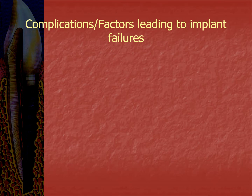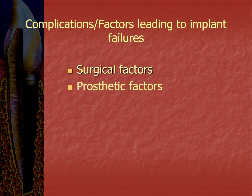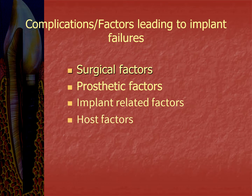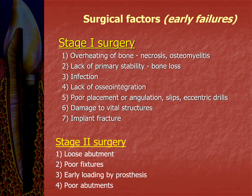Complications or factors leading to implant failures include surgical factors, prosthetic factors, implant-related factors, and host factors. Surgical factors — early failures can happen during stage 1 or stage 2 surgery. Stage 1 complications include overheating of bone leading to necrosis and osteomyelitis, lack of primary stability leading to bone loss, infection, lack of osseointegration, poor placement or angulation, eccentric drills, damage to vital structures, and implant fracture. Stage 2 complications include loose abutment, poor implant or failed osseointegration, early loading by prosthesis, and poor abutments.